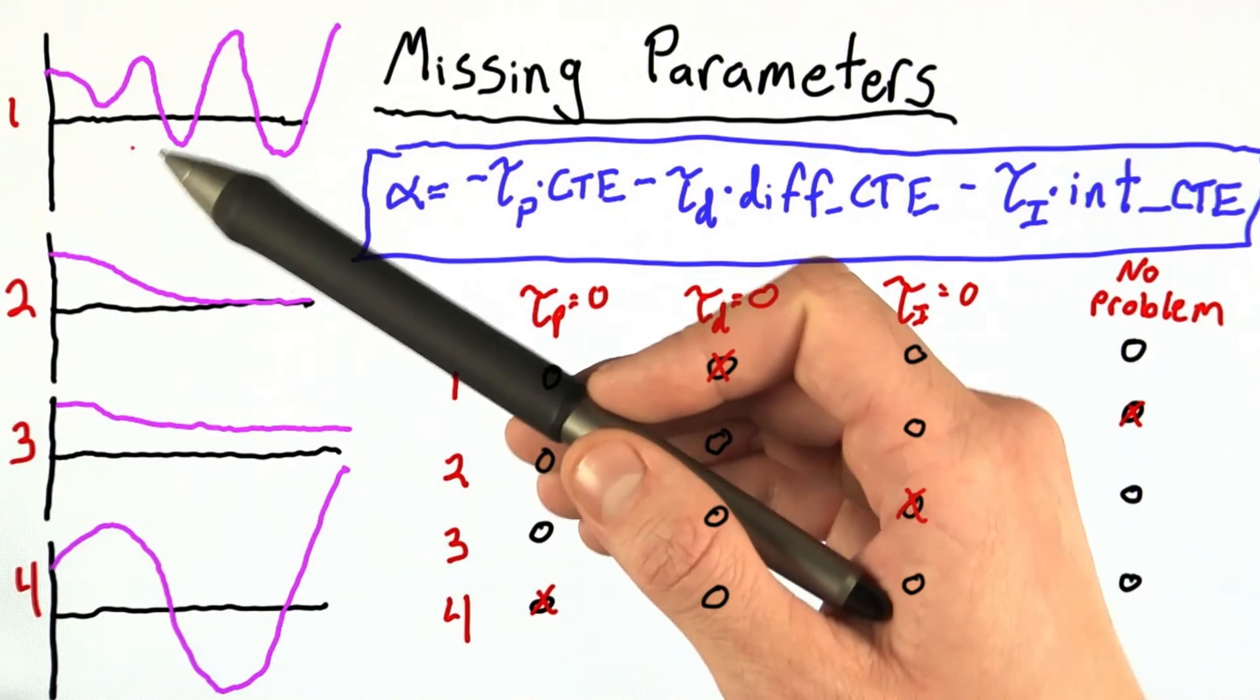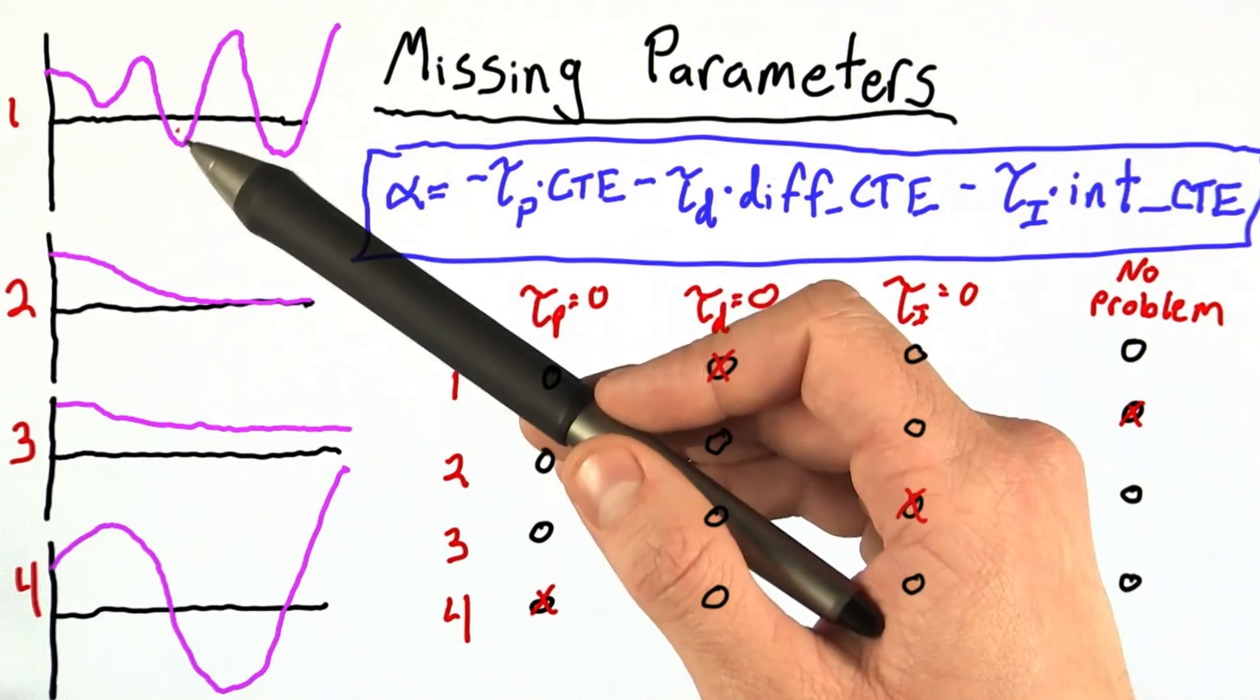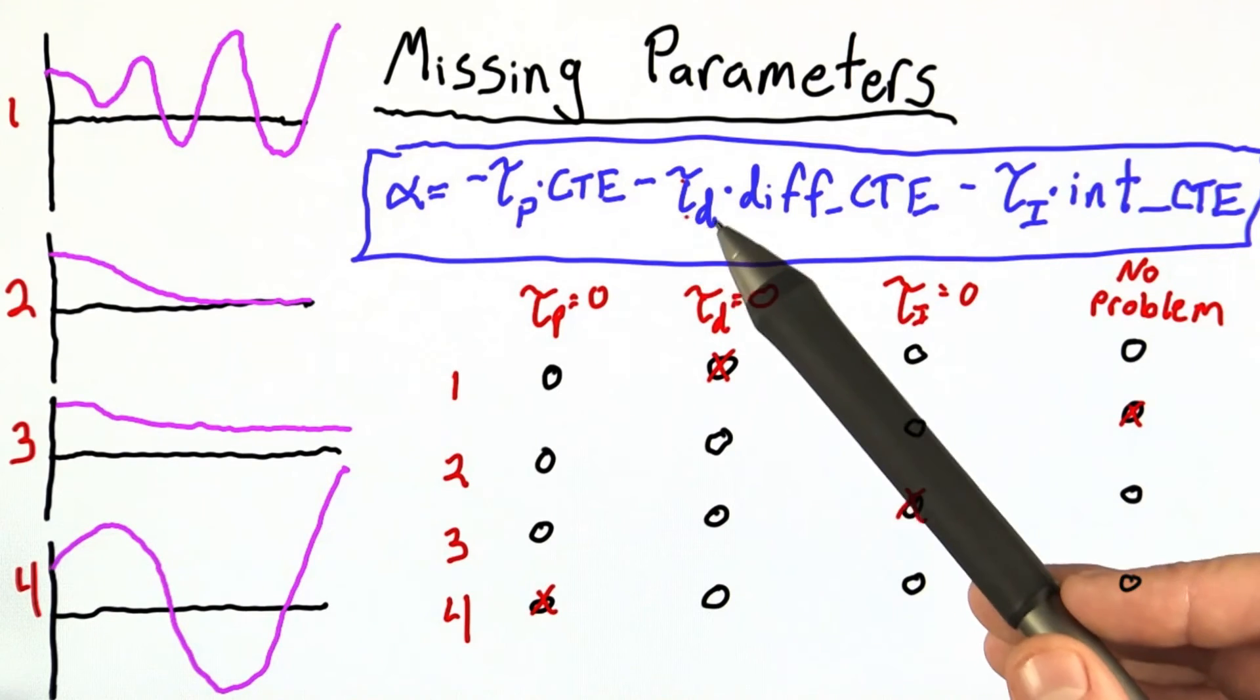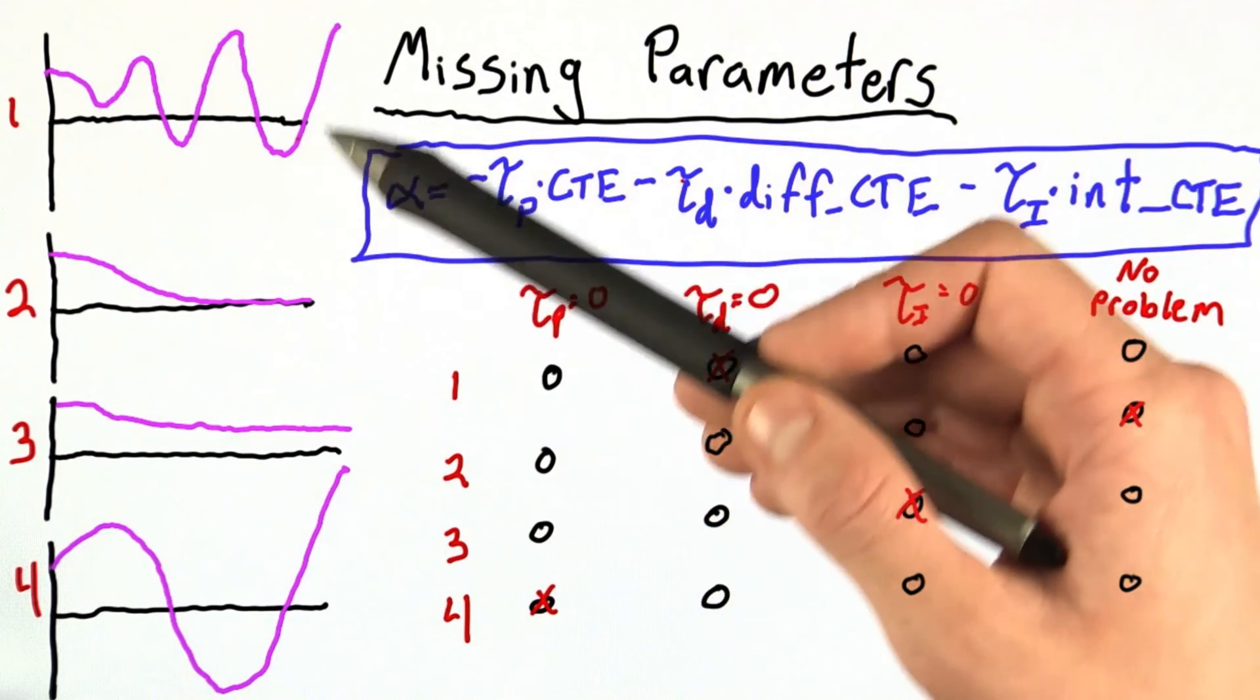The oscillations are not as frequent, however, as they are in case number 1. If we think of this differential CTE term as a sort of smoothing term which damps out these wild oscillations,